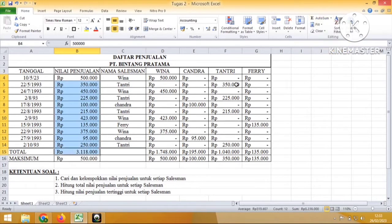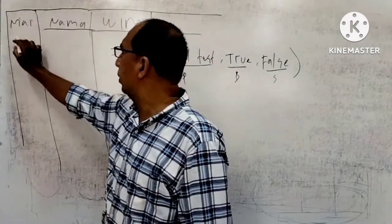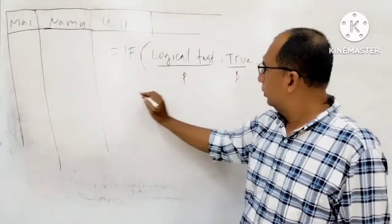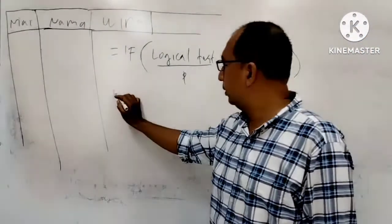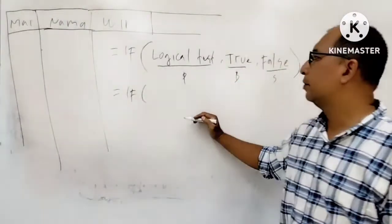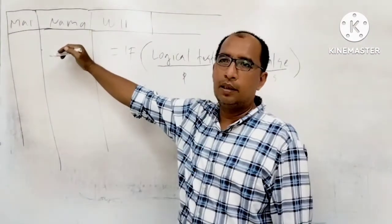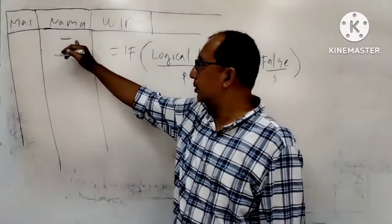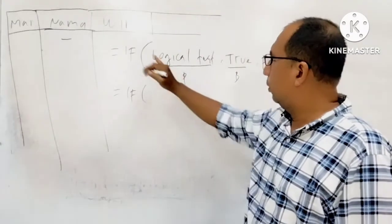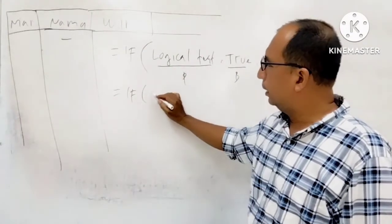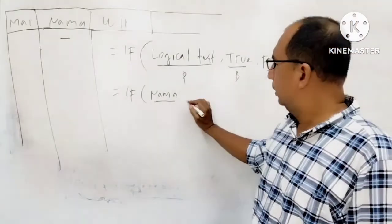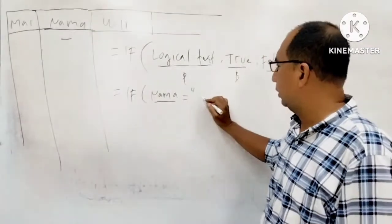Nah sekarang kita coba belajar langsung di kelas ya teman-teman, mungkin lebih mudah. Sekarang kita ingin mencari contoh untuk si Wina. Rumusnya seperti ini, kita coba buat. IF, buka kurung, klik ke isi dari nama si Wina ini. Klik di sini, nama salesnya. Ini adalah logical test-nya atau patokannya. Klik ke nama, tapi ini jangan diketik, diklik ya. Nama.